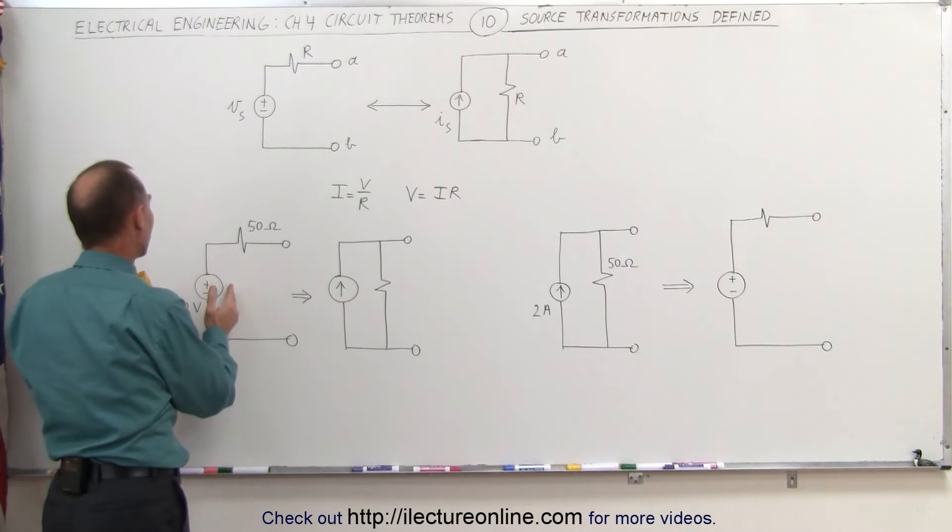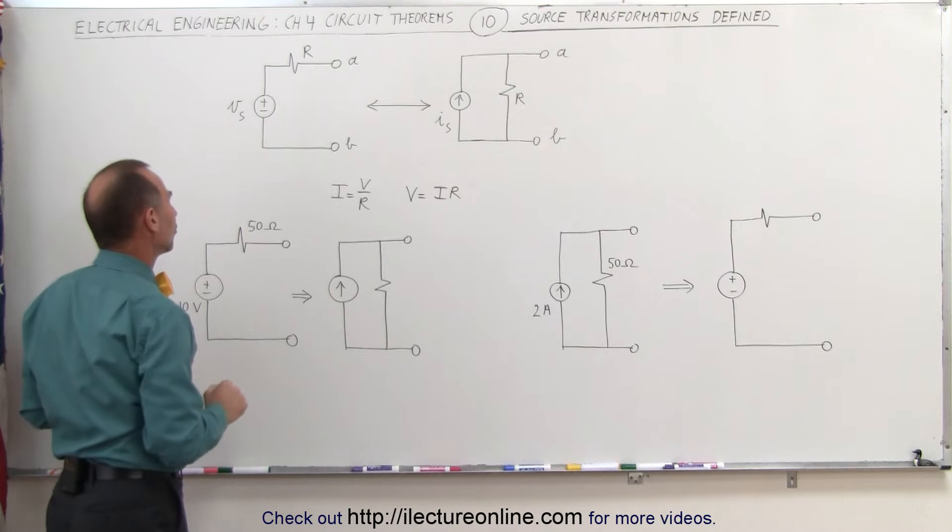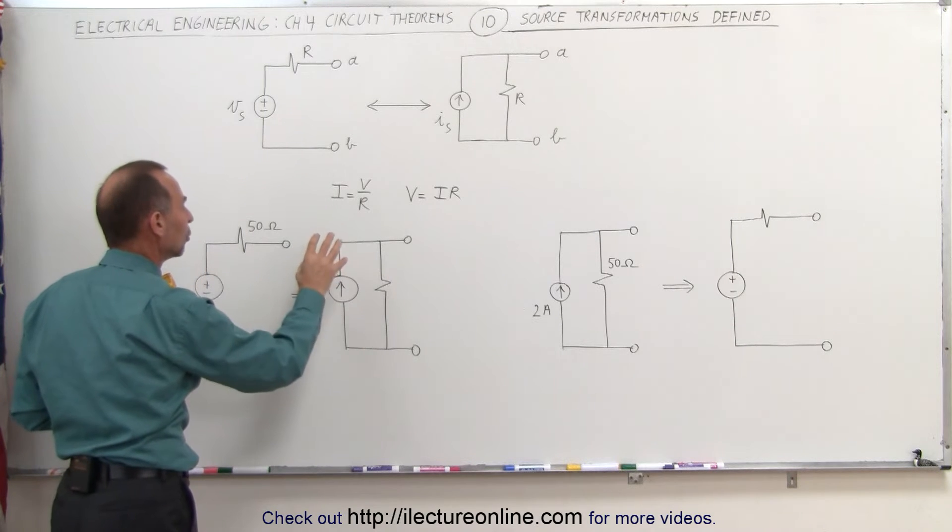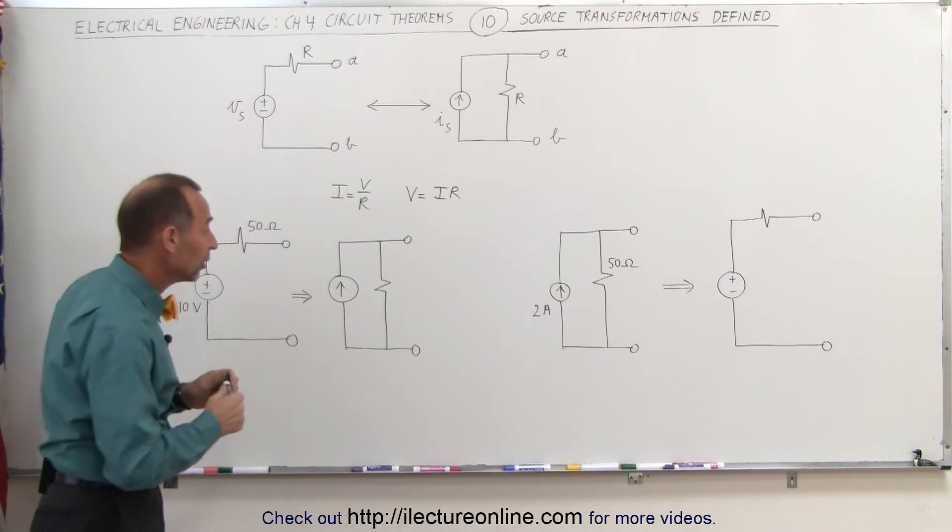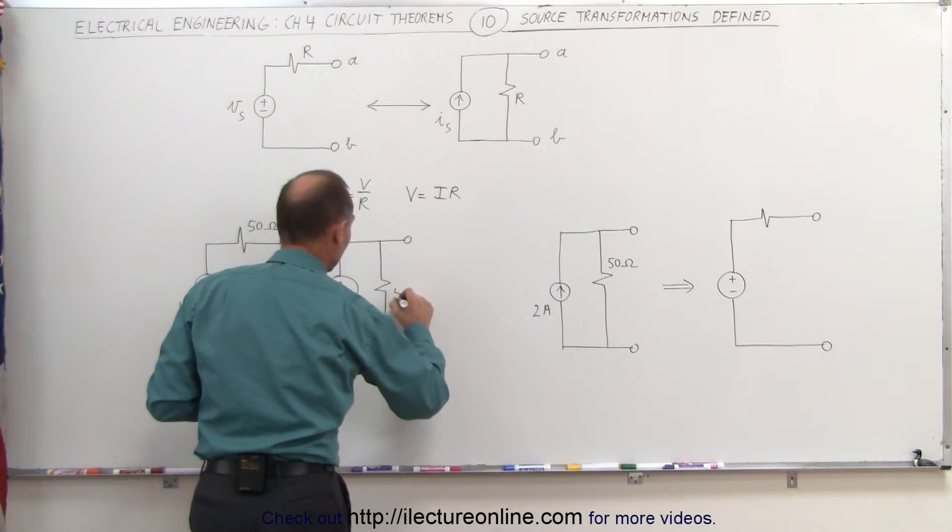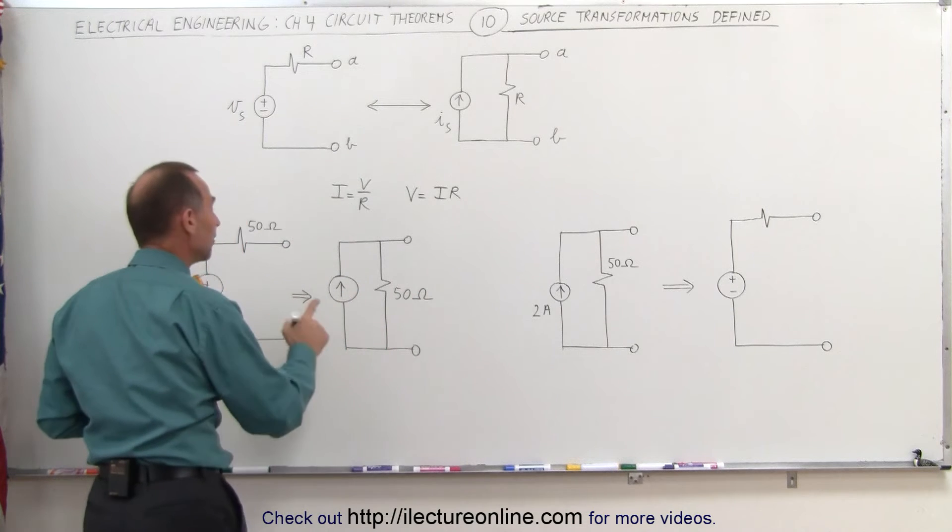Let's say we have a 10 volt source with a 50 ohm resistor in series. We want to transform that to a current source and a resistance in parallel. First of all, the value of the resistance doesn't change. This is therefore 50 ohms.